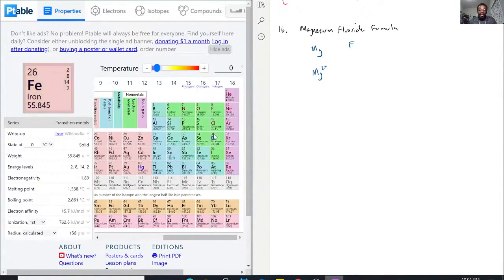Fluorine, on the other hand, needs a minus 1 as an anion for it to reach its noble gas state.